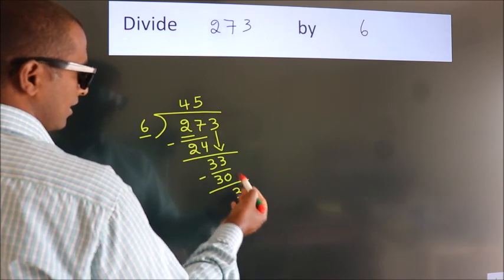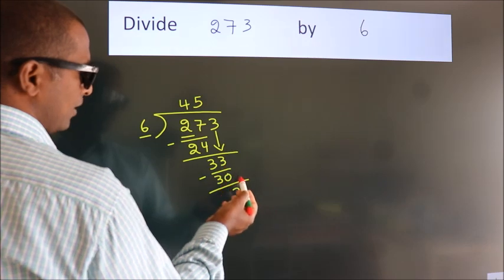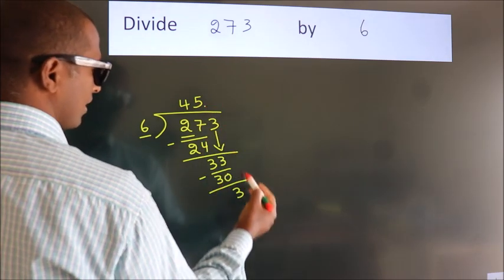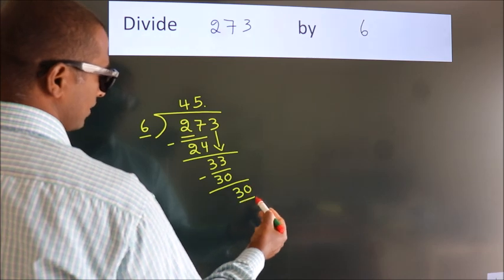After this, no more numbers to bring it down. So what we do is we put a dot and take 0. So, 30.